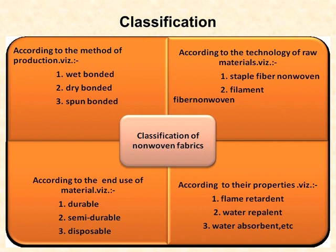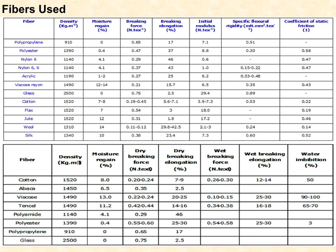Non-wovens are also classified according to their properties such as flame retardant, water repellant, water absorbent, etc. Various fibers can be used for non-woven fabric manufacturing — natural fibers, manmade fibers, synthetic fibers including polypropylene, polyester, nylon, cotton, and silk. All fiber varieties can be used in non-woven technology.